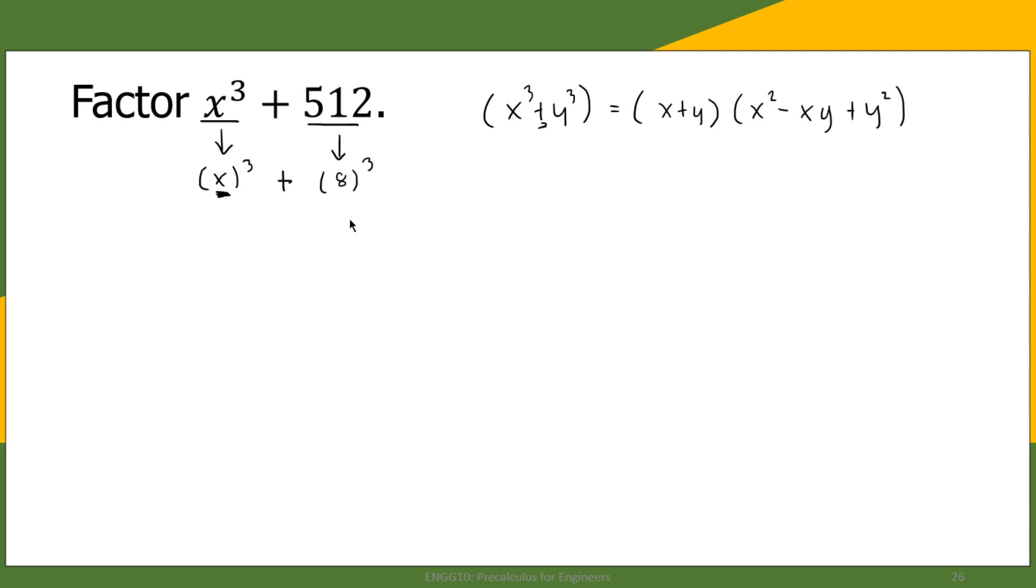Our first term has a base of x, our second term has a base of 8. Therefore x³ + 8³ is equal to (x + 8), and then x² minus the product of the first and second...